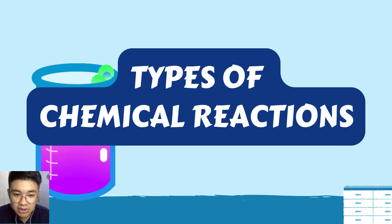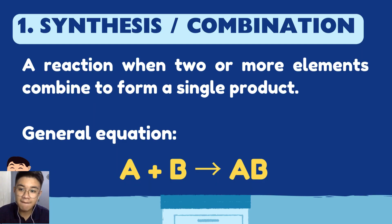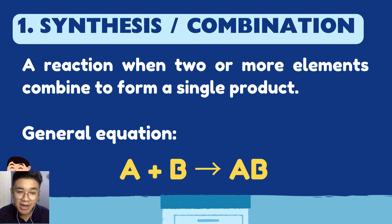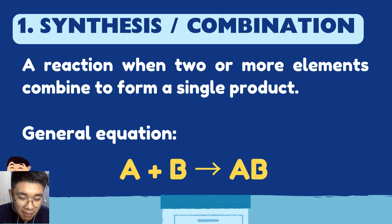Let's move forward. These are the six types of chemical reactions. The first one is synthesis, also called combination reaction. The idea is simple: a reaction where two or more elements combine to form a single product. The general equation is: A + B → AB.